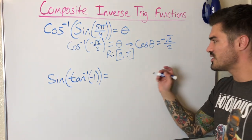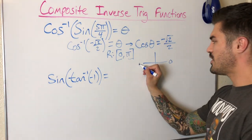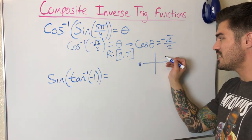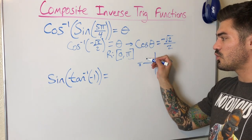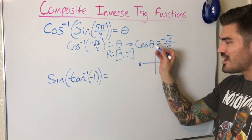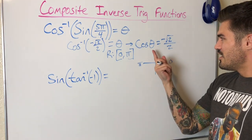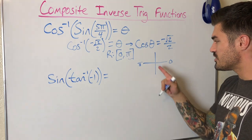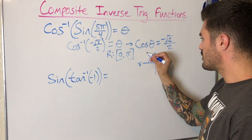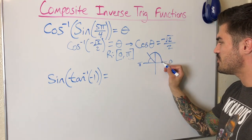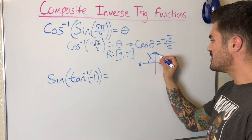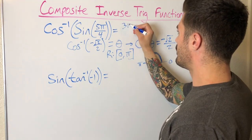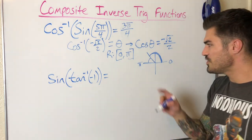The range of cosine inverse is from 0 to π, including both endpoints. So whatever angle theta is, it has to be within this range. We have a negative value for cosine, which means we can't be in the first quadrant — we have to be in the second quadrant. A π/4 reference angle gives √2/2 for cosine, and since I'm in the second quadrant with a π/4 reference angle, theta itself is 3π/4. So my solution is 3π/4.